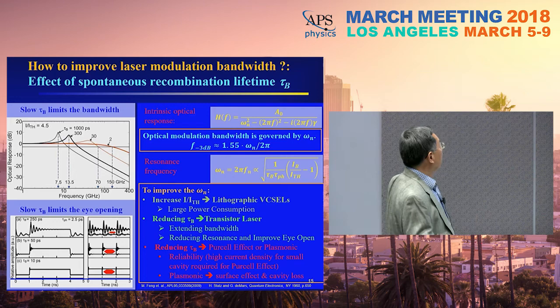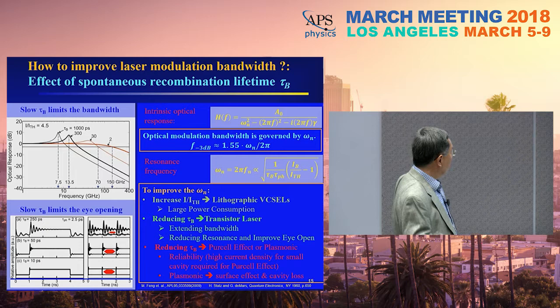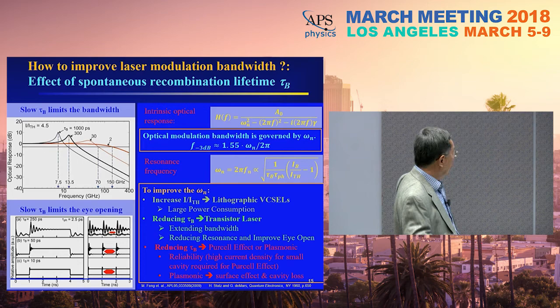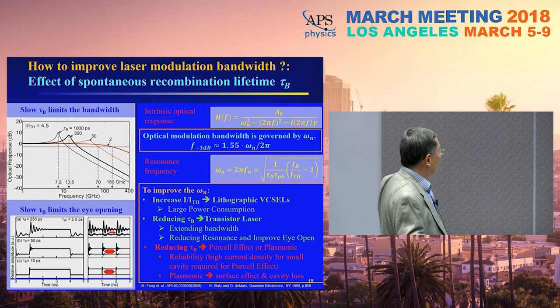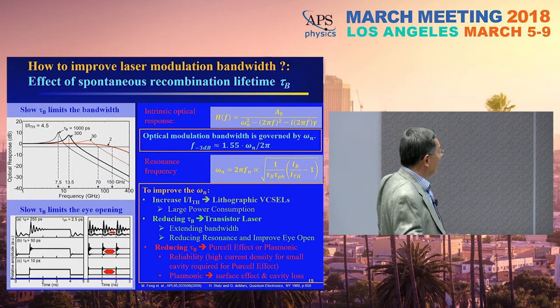Reducing the recombination lifetime also cleans up the eye diagram: with a slow 250-picosecond lifetime, the eye diagram is degraded by ringing effects, but with a clean 10-picosecond lifetime, the eye diagram is very clear. To improve this, the future approach is either to increase photon density by raising the bias above threshold—which causes power consumption and heating problems—or to reduce the recombination lifetime. The Purcell effect requires a device so small that the current density becomes too high for a practical device. Plasmonic approaches involve surface effects, which are not very efficient for recombination.